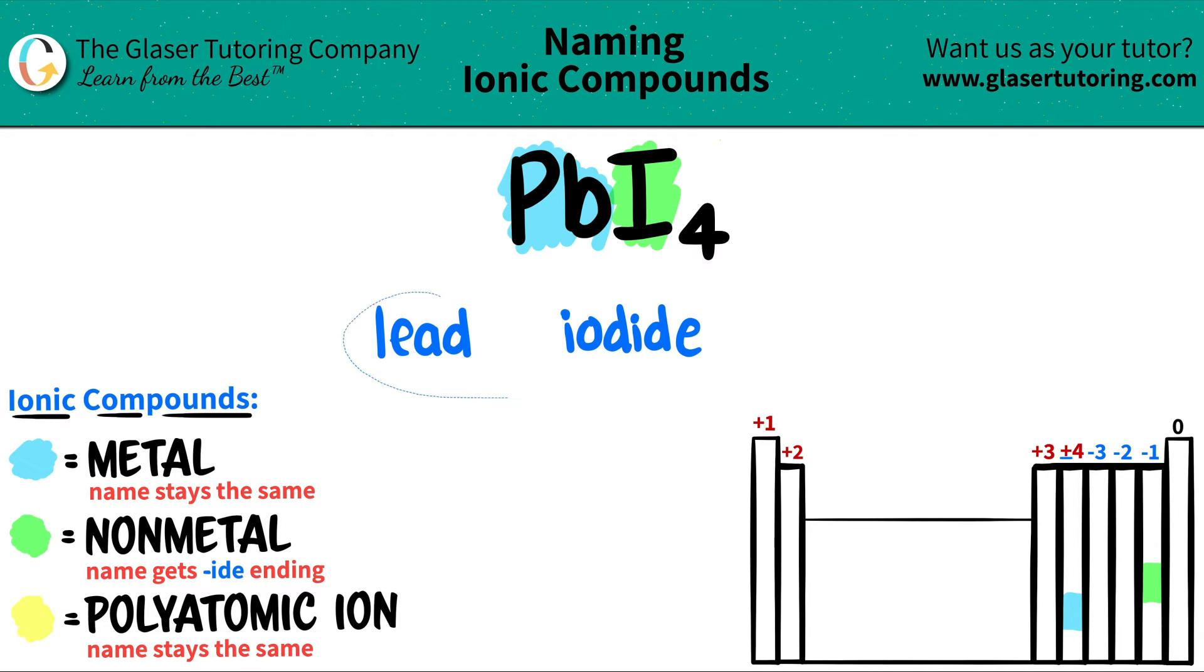So we have lead iodide right now, but with ionic compounds, we just got to make sure, do we need a Roman numeral or not?